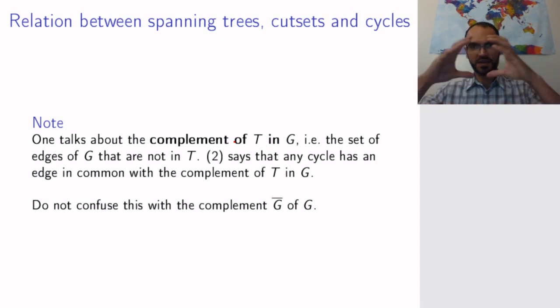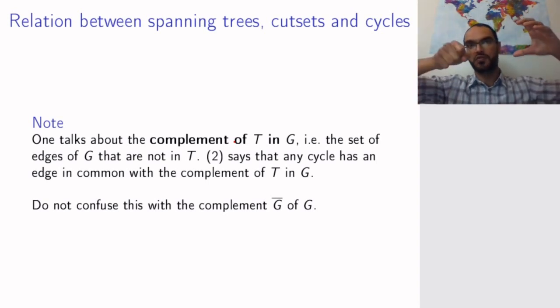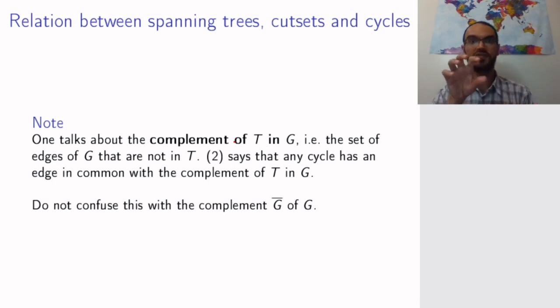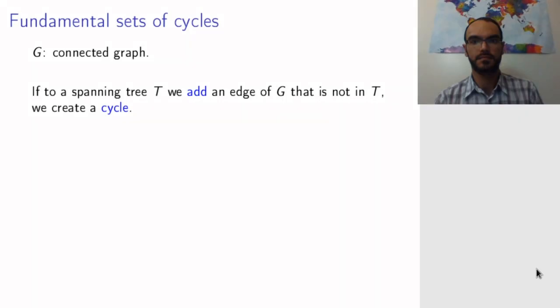Be careful not to confuse this with the complement of the graph G. So, if you have a graph, its complement graph G bar, that's the edges that are missing from the complete graph when you drew your graph. And now this is somehow one step further. You have a graph G as your universe instead of the complete graph, and you have a subgraph of G, and its complement are the edges inside G that do not lie in this subgraph. So, that was the first relation between cutsets, cycles, and trees that gives you an idea of how these things work.